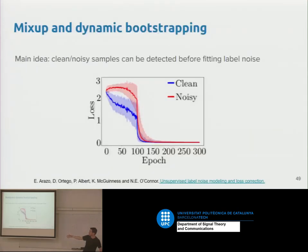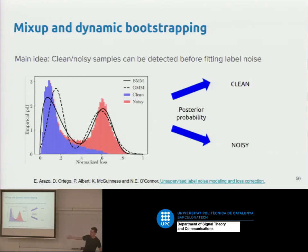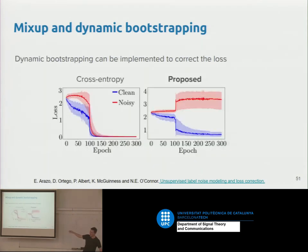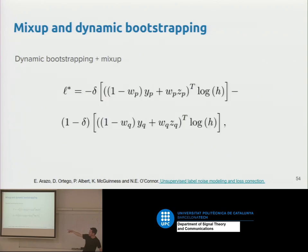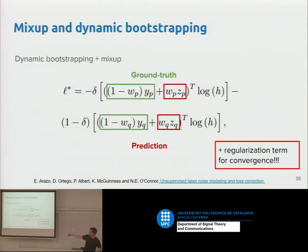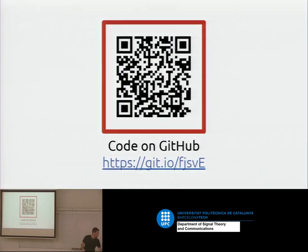To recap our proposed method: we use a better mixture model to predict the weight for bootstrapping — not a fixed weight anymore. We use Wi from a beta mixture model, and combine this with mixup for even better performance. This works well and produces a nice result: going from a dataset that was 80% corrupt down to 13% error. The code for this is on GitHub.